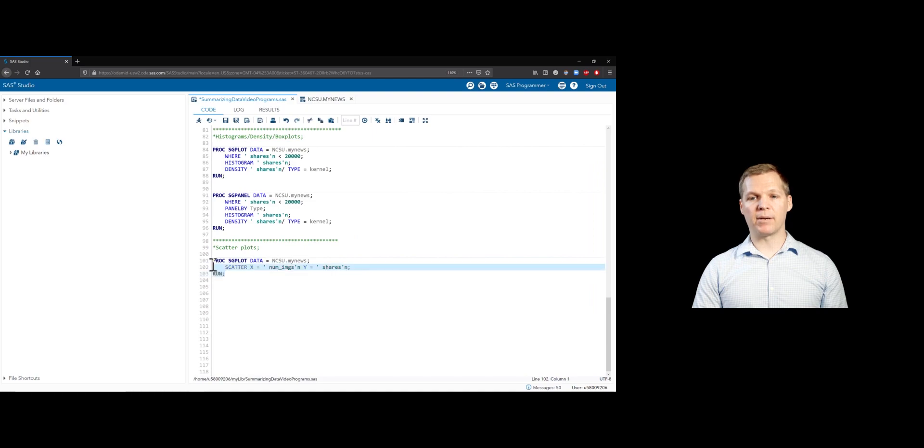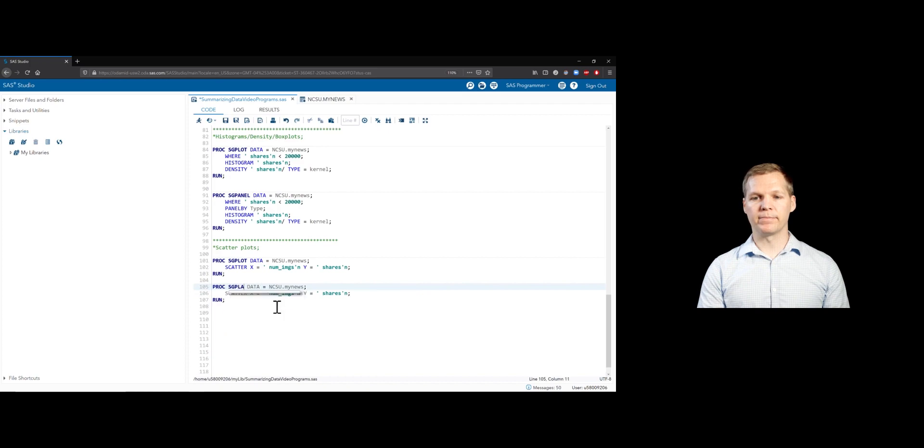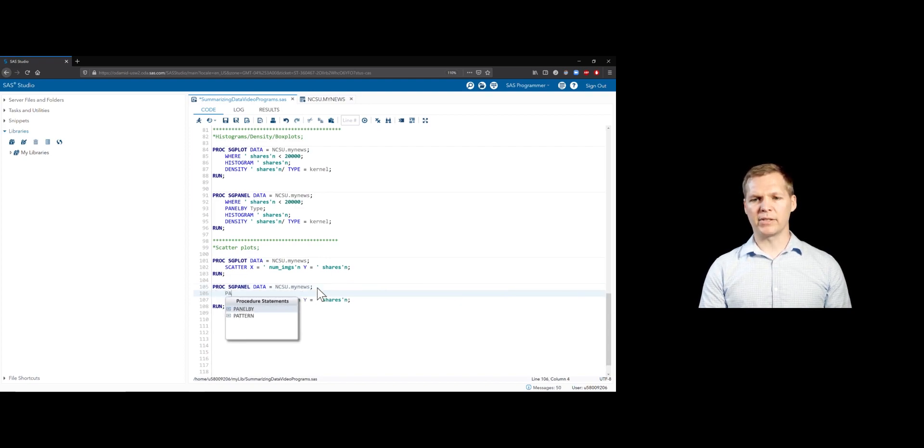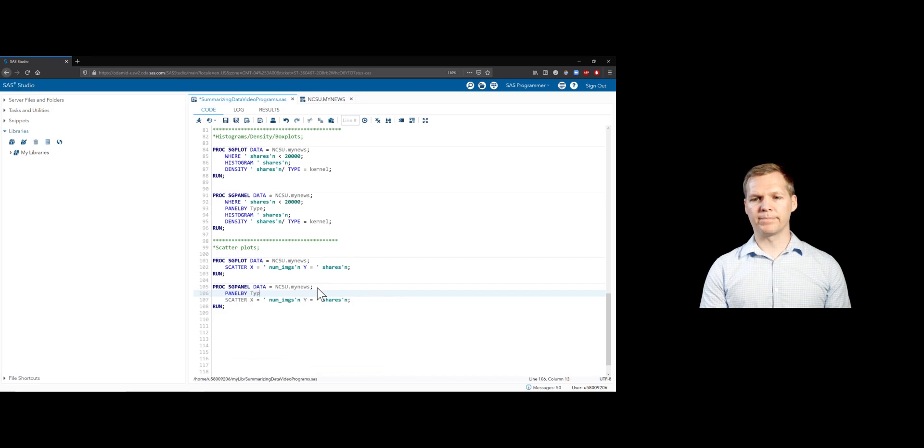If we wanted to do the same plot, but panel it by a different variable, we can, of course, do that by just switching to SGPanel. And then I've got to spell it right, though. And then I'll do a panel by statement and use that variable that we created previously. Type. And let's see what happens with that.